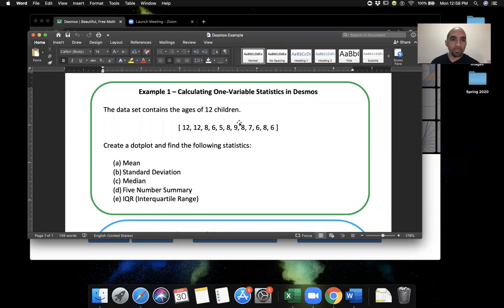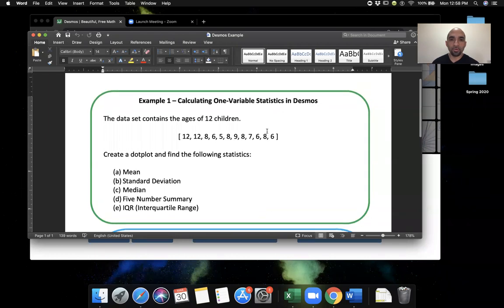Here's an example: we have a data set containing the ages of 12 children and the data values are listed here. What I'm going to do first is copy the values in this list using Ctrl+C.